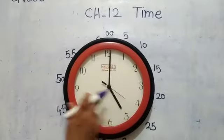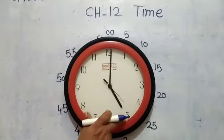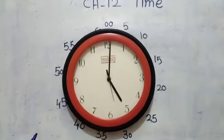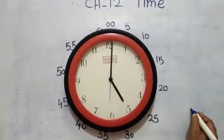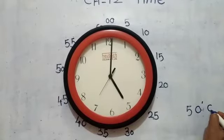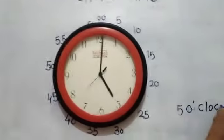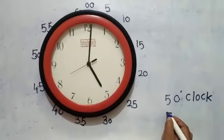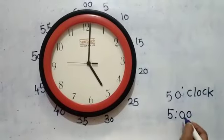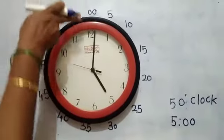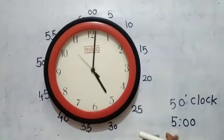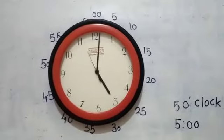Look children. Here the hour hand is on 5 and the minute hand is on 12. So the time is 5 o'clock. We can write it like this: 5 o'clock. Or we can write it as 5:00 — means 5 o'clock. From 12 there is 00. This is the time — this is 5 o'clock.